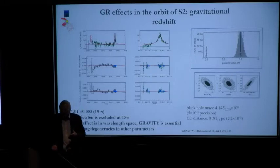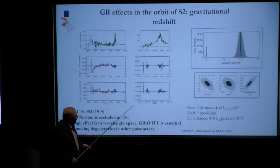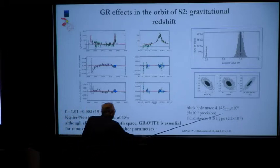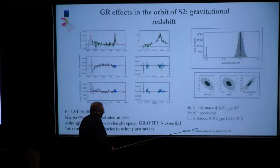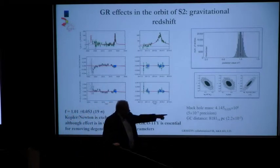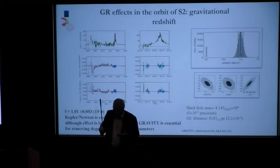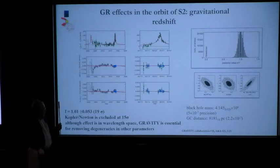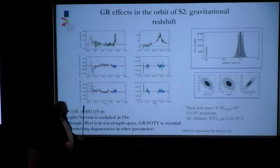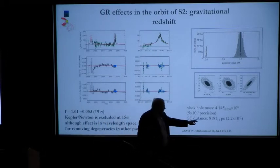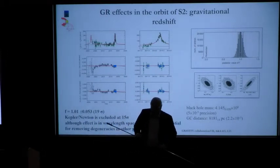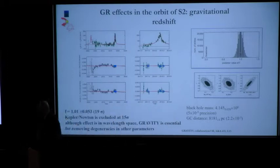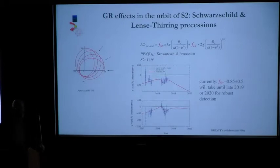So we know that this GR passed this at 20 sigma roughly. And in fact that GRAVITY is essential to remove these degeneracies. Because otherwise you would say, why do you need astrometry if you see the entire effect in wavelength space? And we now know the black hole mass to about half a percent and the galactic center distance to 0.2%. That one is neat because we weren't pushing for that, but it came out really rather nicely.